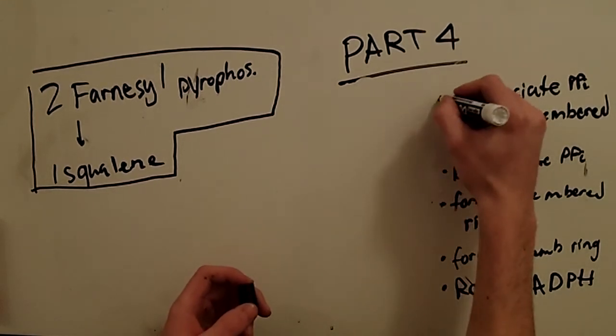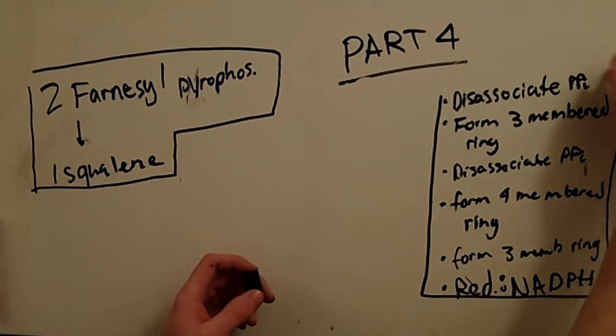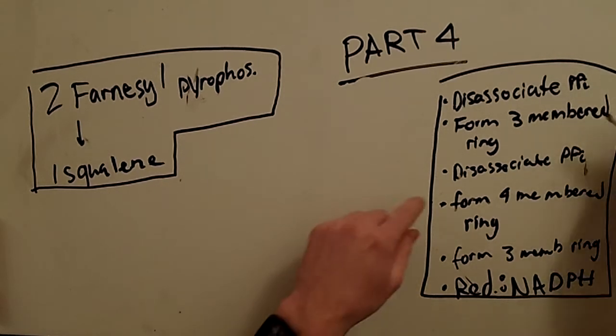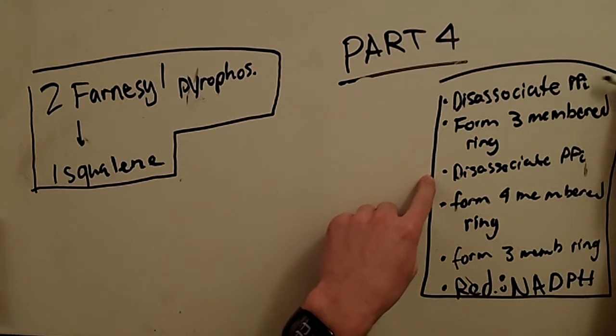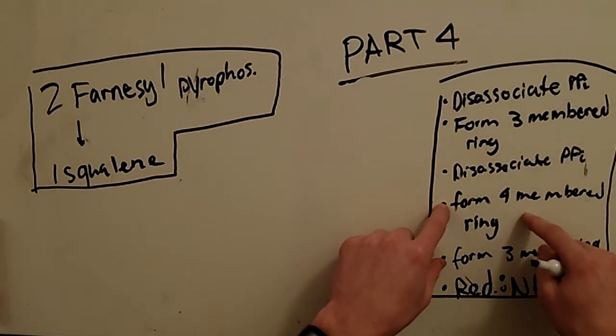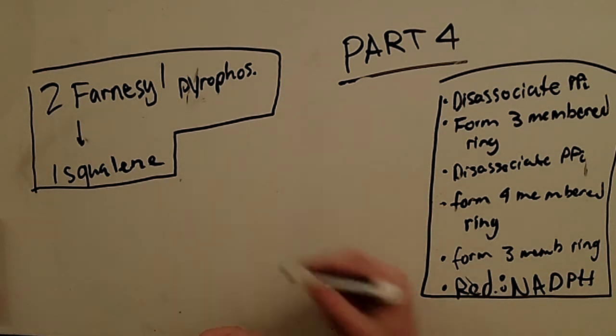So, these are the steps right here. The steps look complicated because there are so many, but they are not. There are two dissociations of PPI steps, which would be 1 and 3, and there's three ring-forming steps. So a three-membered ring to a four-membered ring, back to a three-membered ring, and then finally there's a reduction.